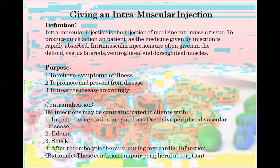These conditions impair peripheral absorption — the heart can also be affected. So we will not give IM injection to the patient in these conditions: occlusive peripheral vascular disease, edema, shock, ongoing thrombolytic therapy, or myocardial infarction. These are the contraindications.